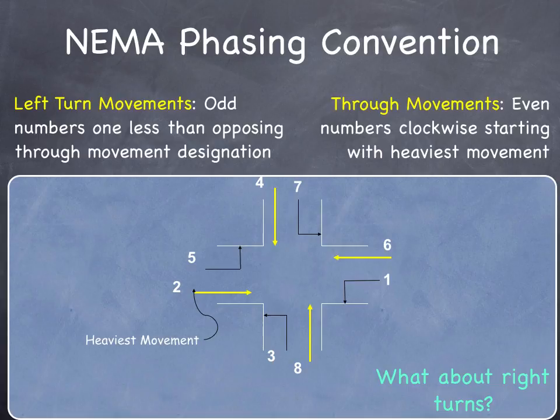When we say a phase is allocated to a specific movement, it means that movement receives the right-of-way. There might be multiple movements that receive right-of-way simultaneously, as long as they are not conflicting. For instance, the northbound movement and the southbound movement might both get the green light at the same time — they're on the same phase and are not conflicting.